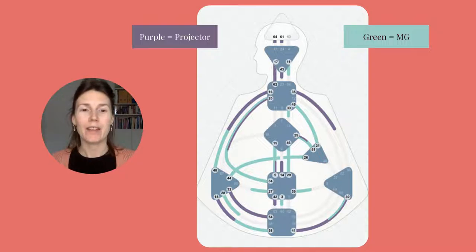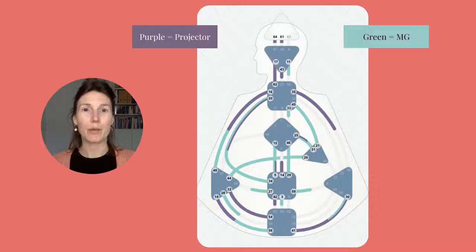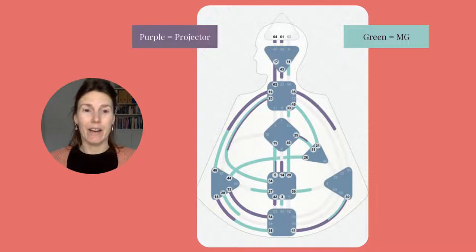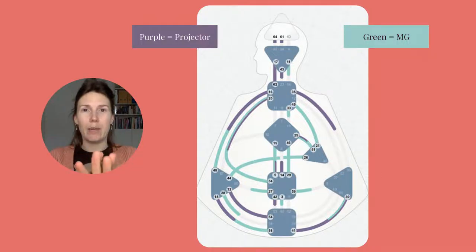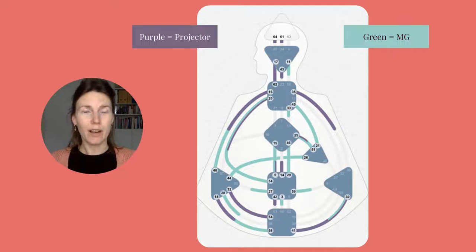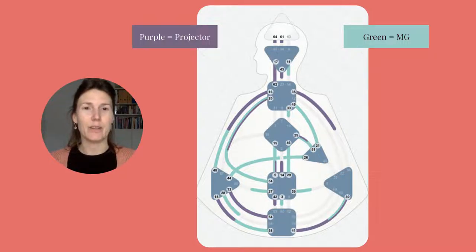Hey, hello and welcome to this video. In this series I want to share a little bit more about real life examples of living your design, sharing about my own life and my own examples, and sometimes also about clients. What you see here is a connection chart, which is basically a trans-org chart — this is what you get when you have two designs and you put them together, laying them on top of each other. You can see purple and green colors in the gates and channels: the purple is the projector's design, and the green one is my design, which is manifesting generator.